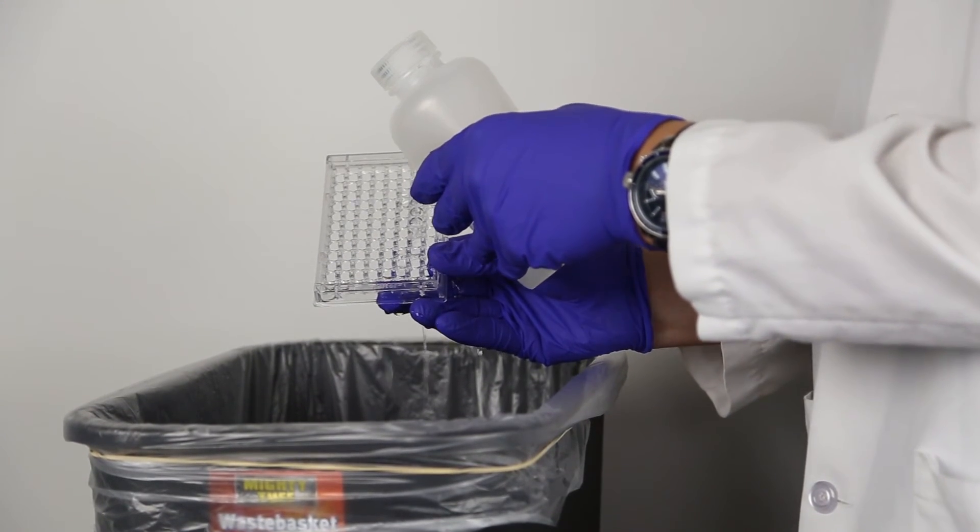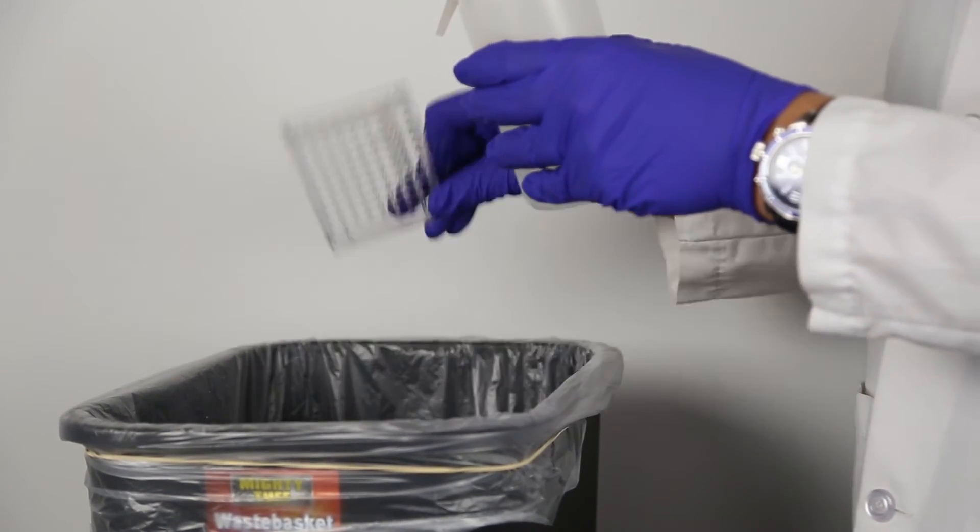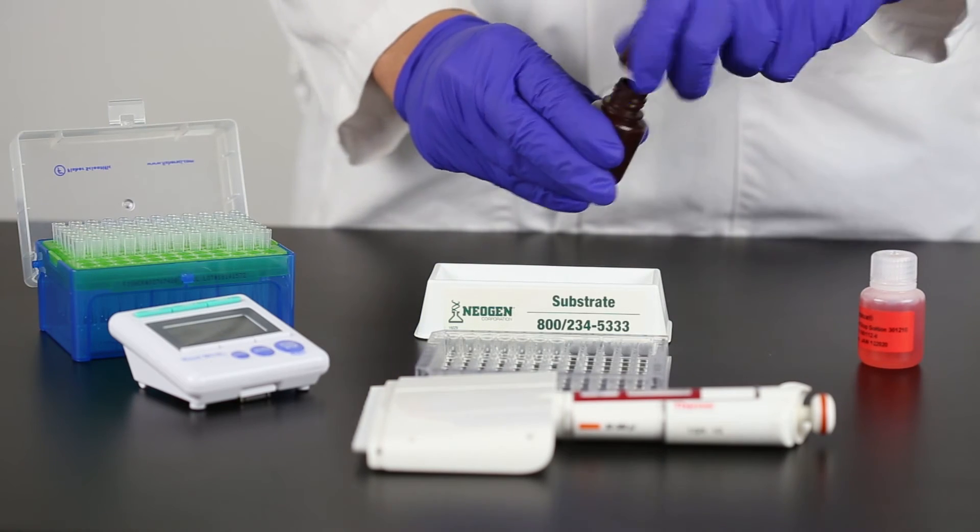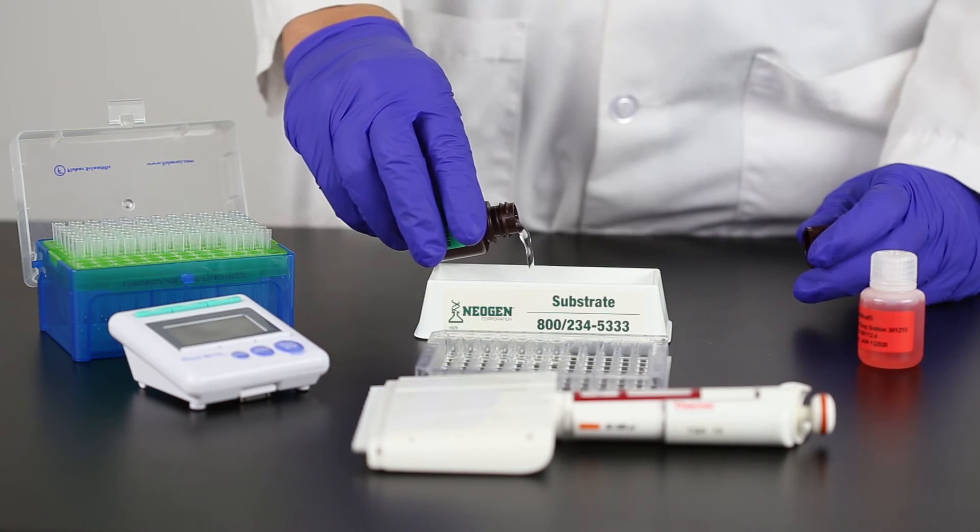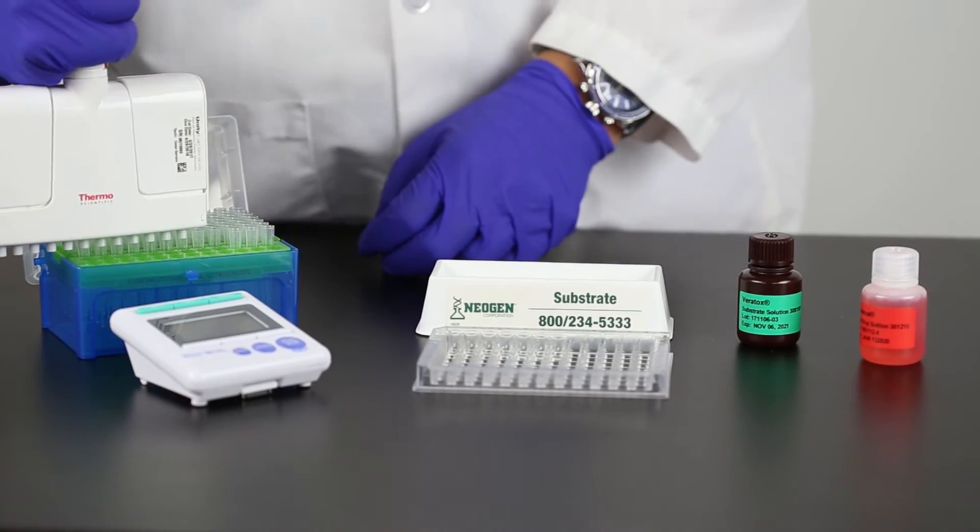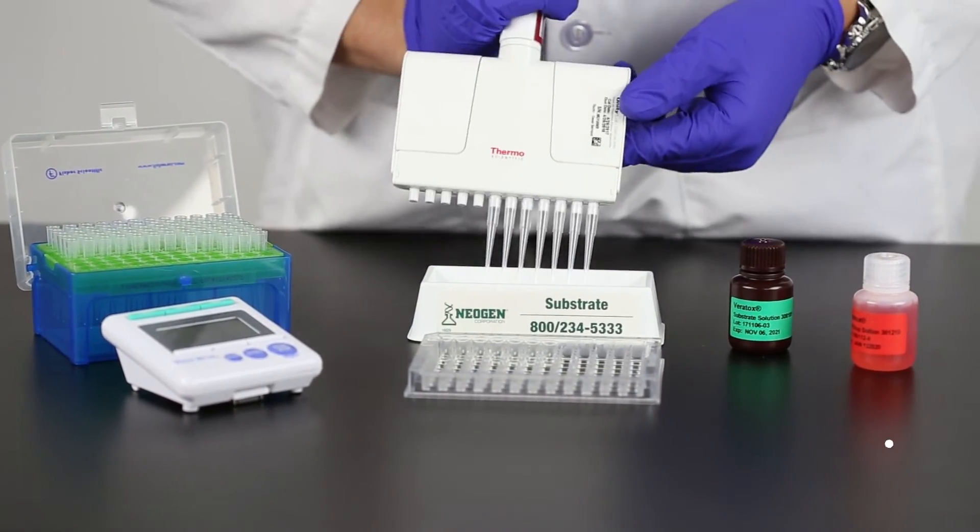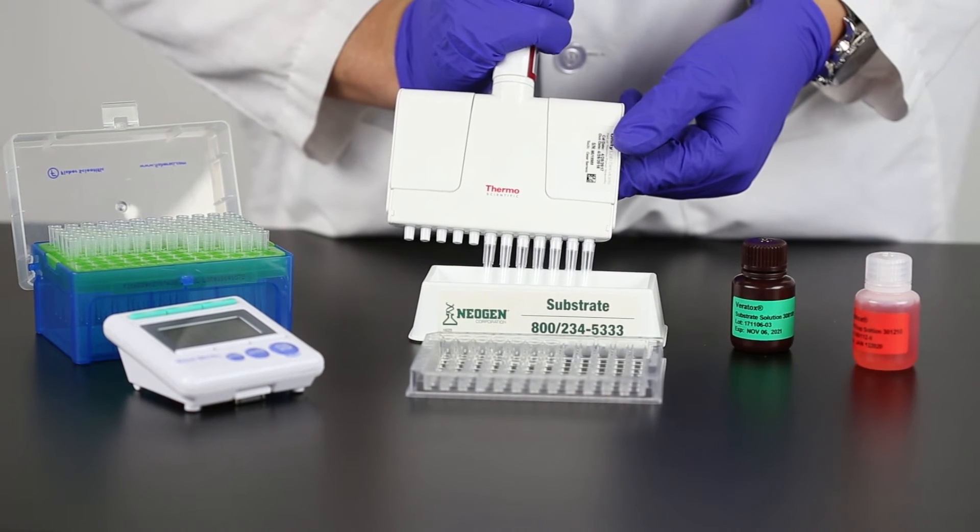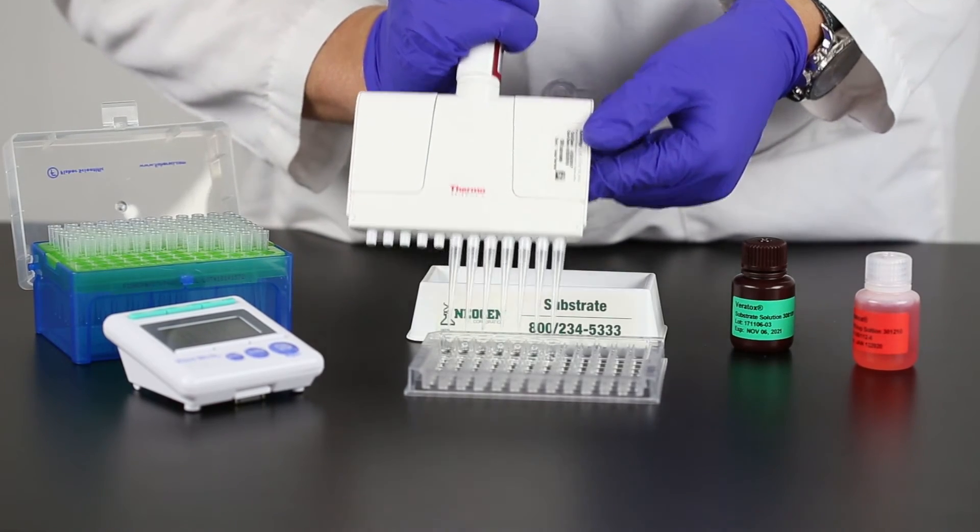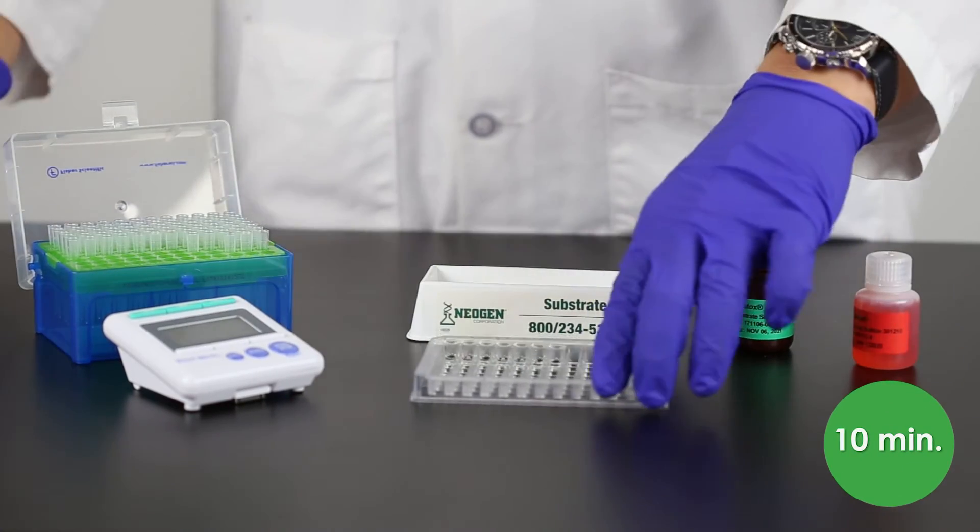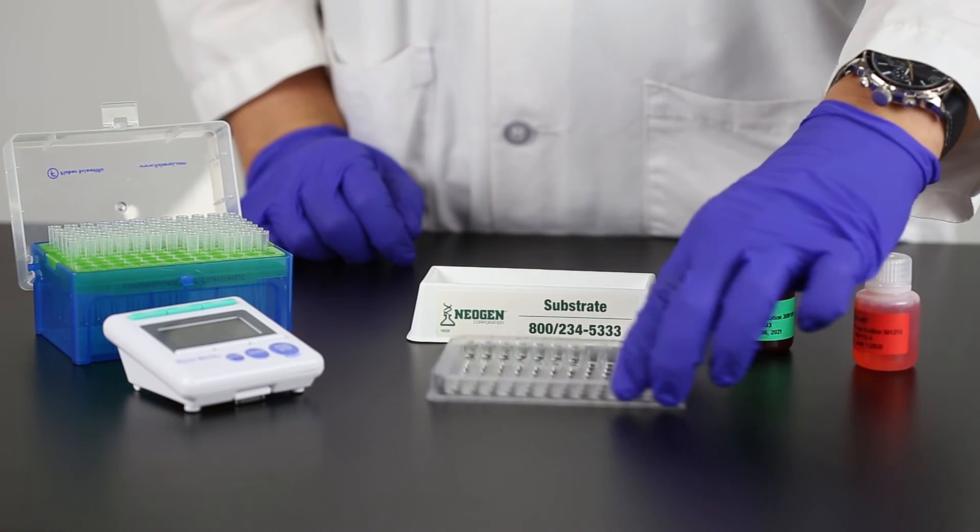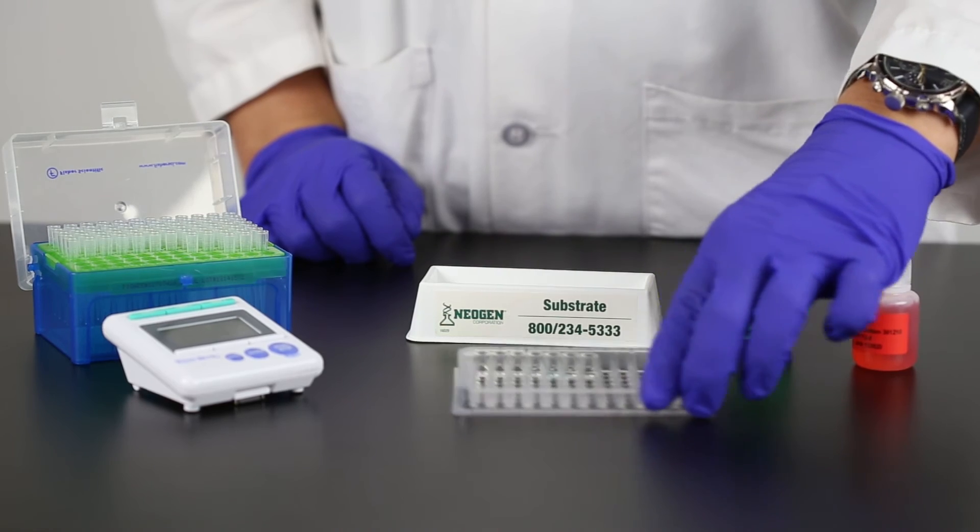Wash all wells with the wash buffer solution as demonstrated prior. Pour the needed volume of substrate solution from the green label bottle into a clean reagent boat. Place new tips on the 12-channel pipetter and transfer 100 microliters of substrate into each well. Set timer for 10 minutes. Mix by sliding the microwell holder back and forth on a flat surface. Incubate for 10 minutes at room temperature.